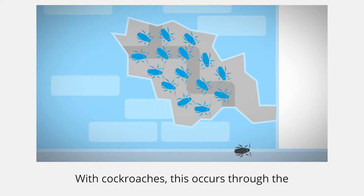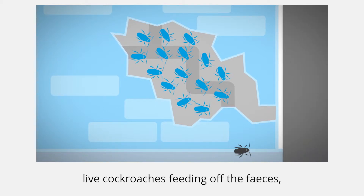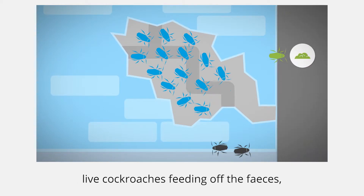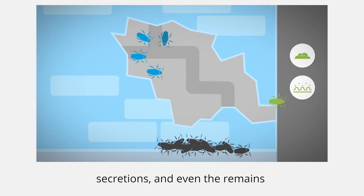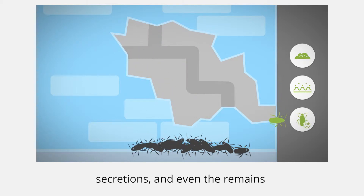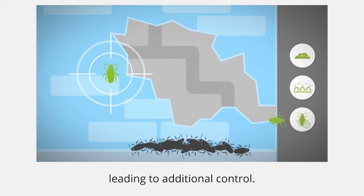With cockroaches, this occurs through the live cockroaches feeding off the feces, secretions, and even the remains of the dead cockroaches in the harbourage, leading to additional control.